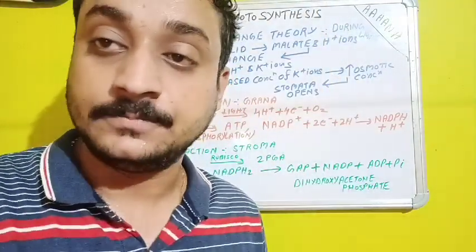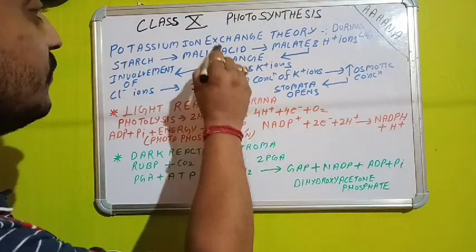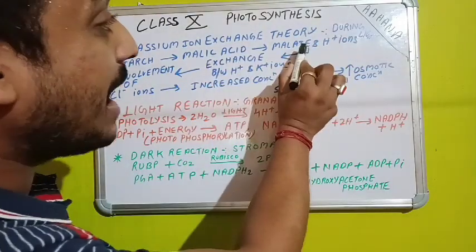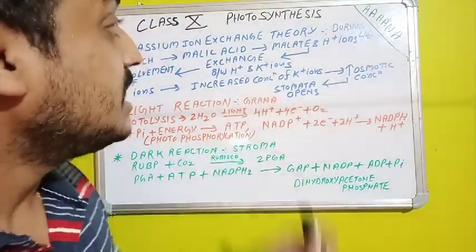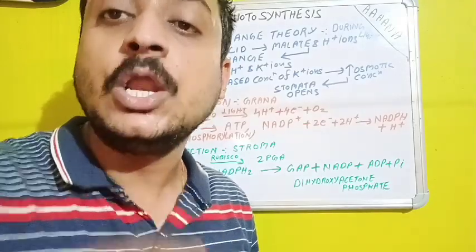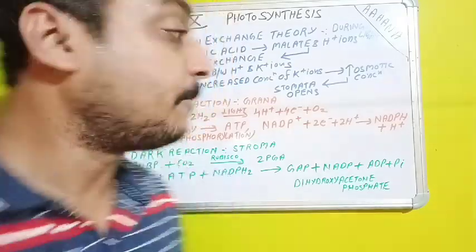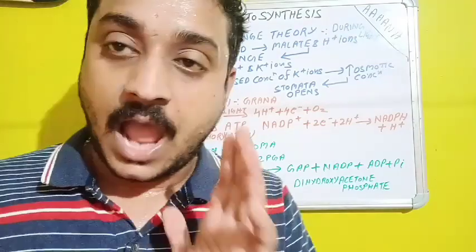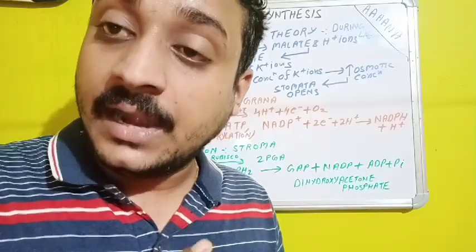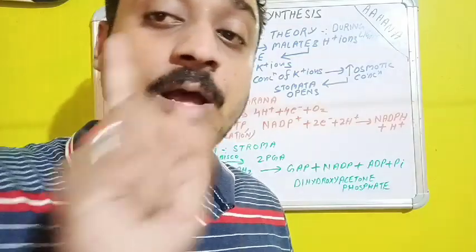Two types of ions are formed: malate ions and H⁺ ions. The extra deposition of H⁺ ions will go to the epidermal cells of the plant, and from the epidermal cells the potassium ions will enter the guard cells along with the presence of the malate ion.